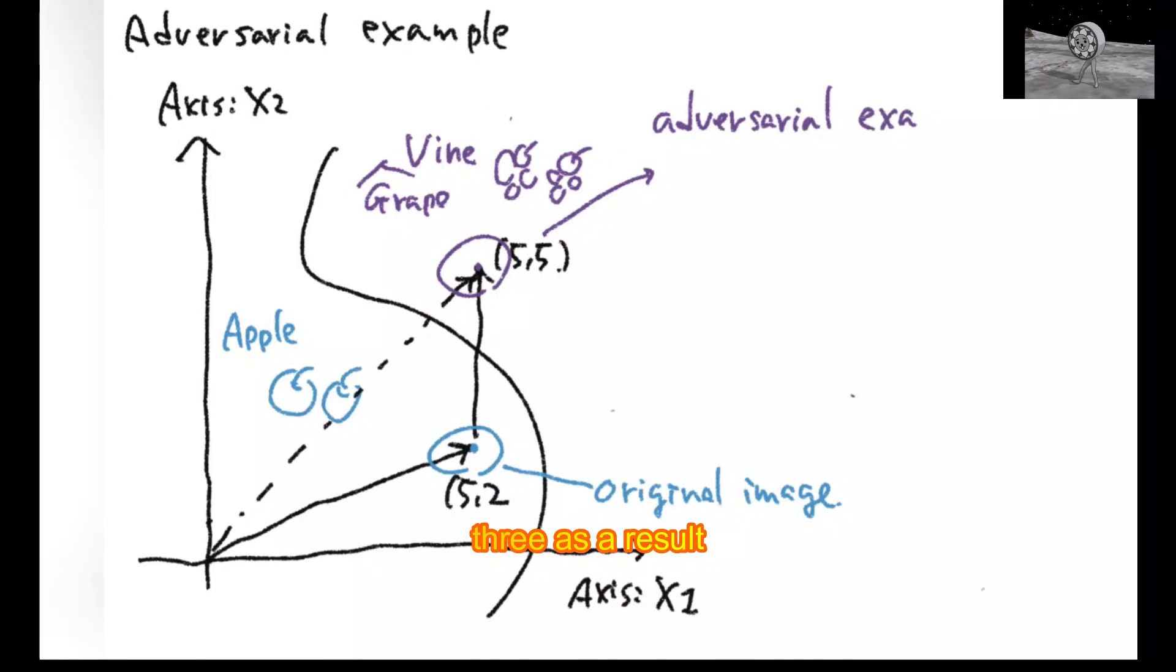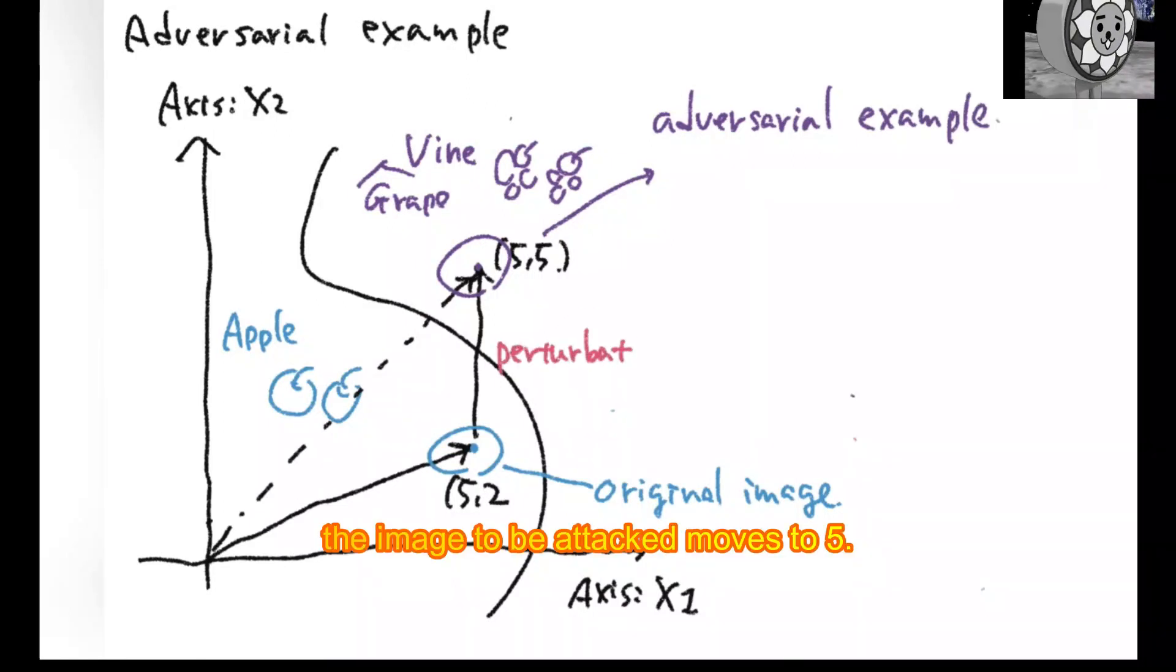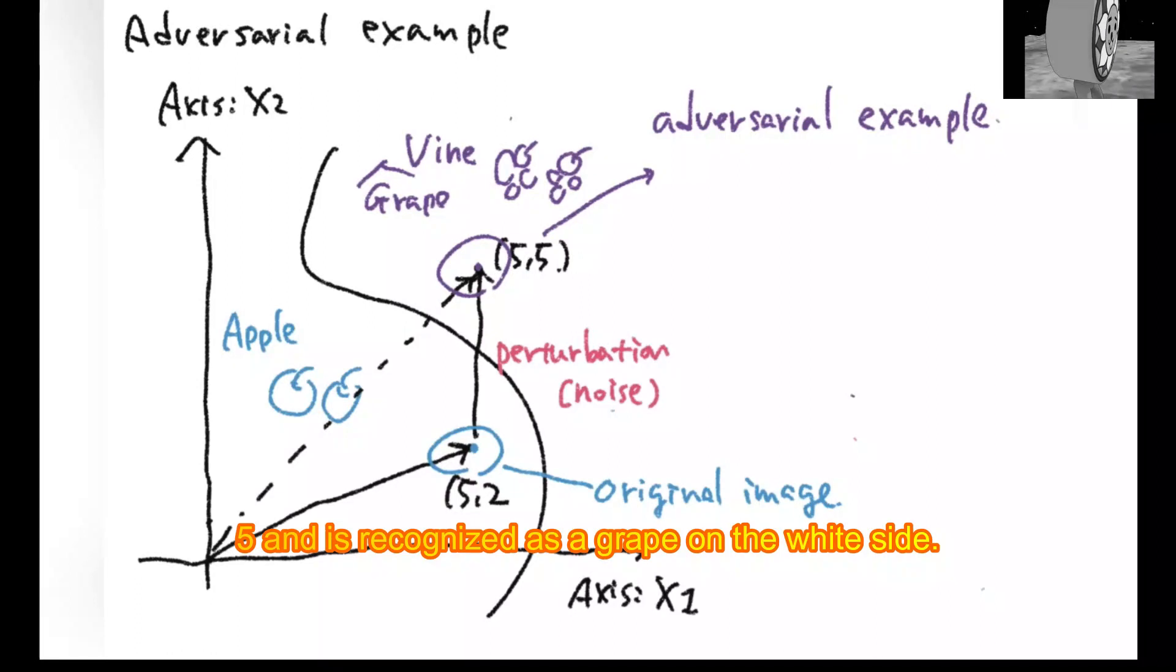As a result, the image to be attacked moves to (5, 5) and is recognized as a grape on the right side.